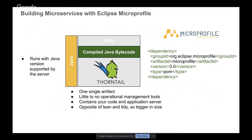Uber or fat jars can be considered fat and big in size, but they contain only everything essential to run the application server plus your code. Because it runs in a scalable environment, you're unlikely to log in on these servers, so there's little to no operational management tooling. If a jar is not running healthy — which can be checked with the MicroProfile health check endpoint — your service is likely to be shut down by the orchestrator and started up again in a new instance. That is how microservices work.